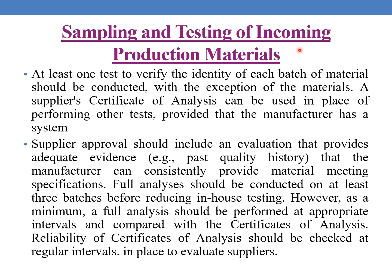Coming to sampling and testing of incoming production materials: at least one test to verify the identity of each batch of material should be conducted. A supplier certificate of analysis can be used in place of performing other tests, provided the manufacturer has a system. Supplier approval should include an evaluation that provides adequate evidence — for example, past quality history — that the manufacturer can consistently provide material meeting the specifications.